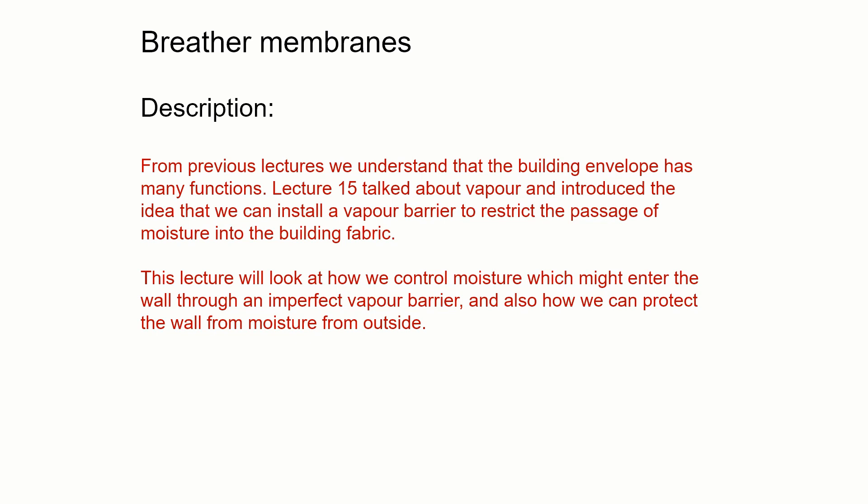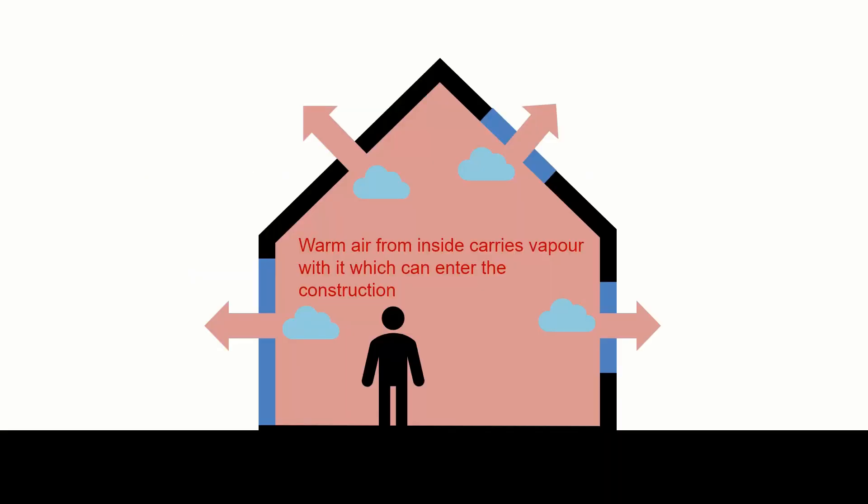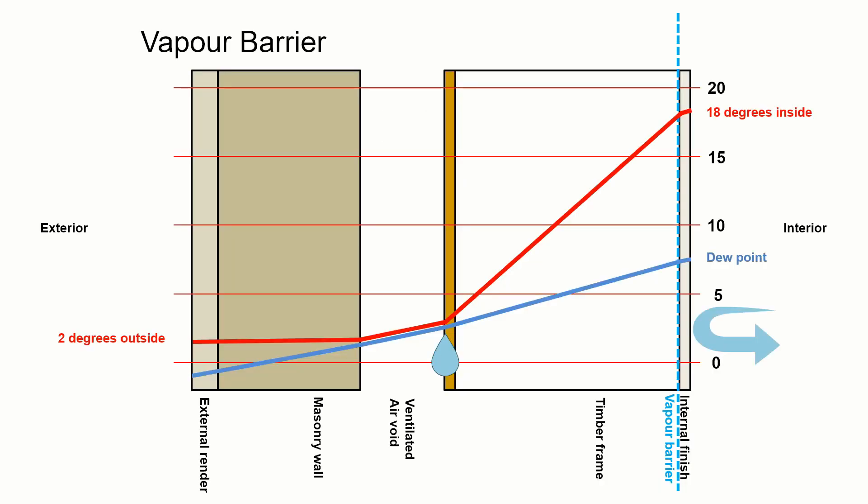So when we're looking at breather membranes, we're going to be looking at how we deal with vapour that may get past the vapour barrier. In lecture 15 we talked about the vapour barrier and introduced the idea that we can install this to restrict the passage of moisture into the building fabric. But we need to think about how we control moisture which might enter that wall through an imperfect vapour barrier and how we can also protect the wall from moisture from the outside.